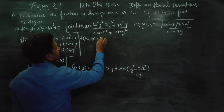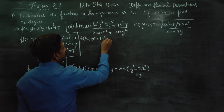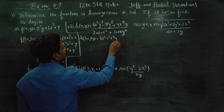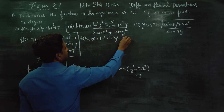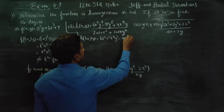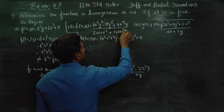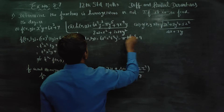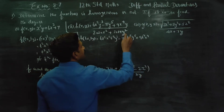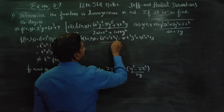For h, if you say 6x squared y cubed plus 9x to the power 4 times y, substituting x by tx and y by ty gives: 6 times tx squared times ty cubed plus 9 times tx to the power 4 times ty, whole divided by the expression.